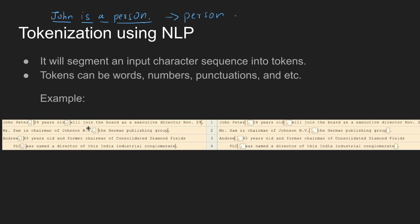Another example is 'N.V.' — 'N.V.' is an initial. So if we use 'N.V.', then we do not add an extra space. This is how the tokenizer handles initials.